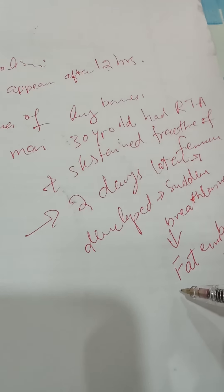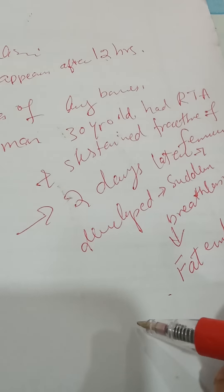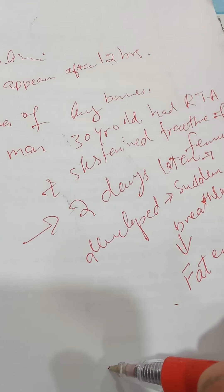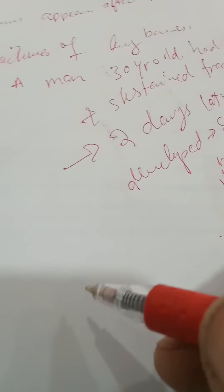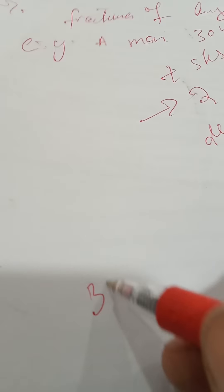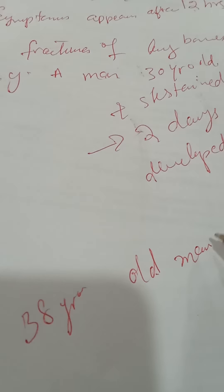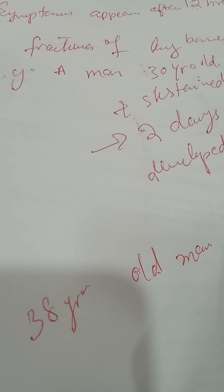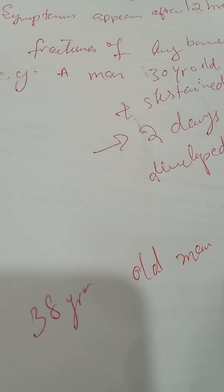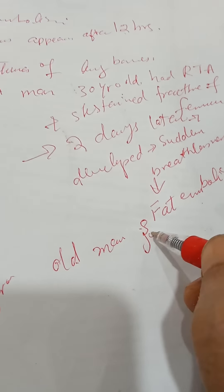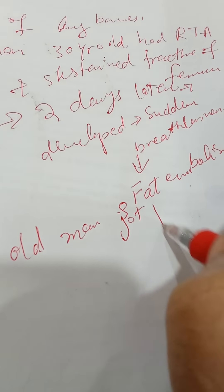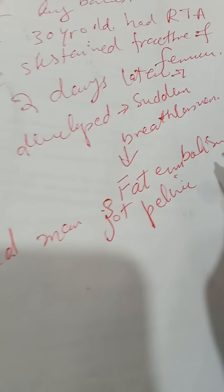So, fat embolism is mostly due to the fractures of long bone. Another example: 38 year old man got pelvic fracture.